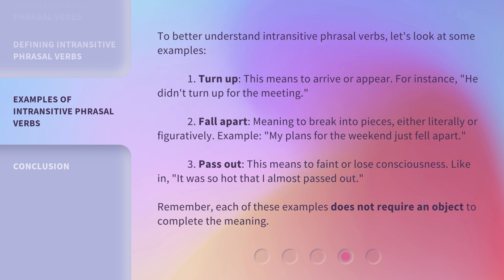To better understand intransitive phrasal verbs, let's look at some examples. 1. "Turn up" — this means to arrive or appear. For instance, "he didn't turn up for the meeting." 2. "Fall apart" — meaning to break into pieces, either literally or figuratively. Example: "my plans for the weekend just fell apart." 3. "Pass out" — this means to faint or lose consciousness, like in "it was so hot that I almost passed out." Remember, each of these examples does not require an object to complete the meaning.